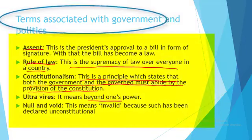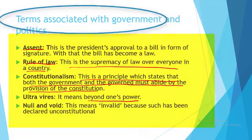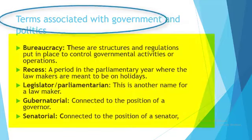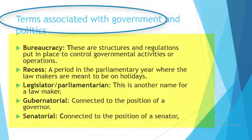Then we have ultra vires, which means beyond one's power — one of the ways the organs of government check each other's excesses. Then we have null and void, which simply means invalid. When you declare something null and void, it means that thing is invalid.